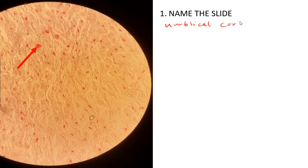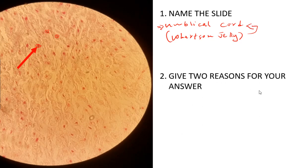On this slide, the veins and arteries have not been projected — only Wharton's jelly of the umbilical cord is shown. Give two reasons for your answer: the type of connective tissue here is mucoid connective tissue.